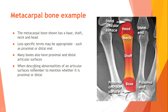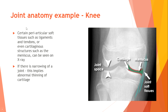When describing abnormalities of an articular surface, remember to mention whether it is proximal or distal. Joint anatomy — for example, the knee. Certain periarticular soft tissues such as ligaments and tendons, or even cartilaginous structures such as a meniscus, can be seen on x-ray. If there is narrowing of a joint, this implies abnormal thinning of cartilage. We can identify joint space, cartilage, and joint soft tissues on the image.